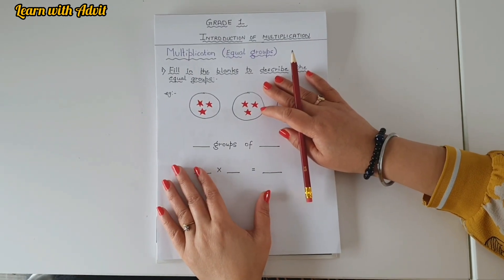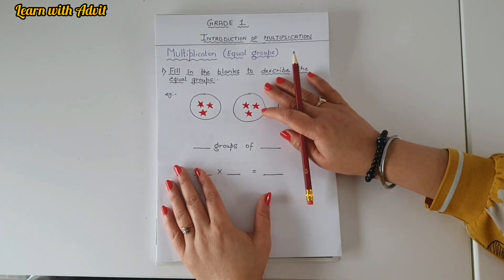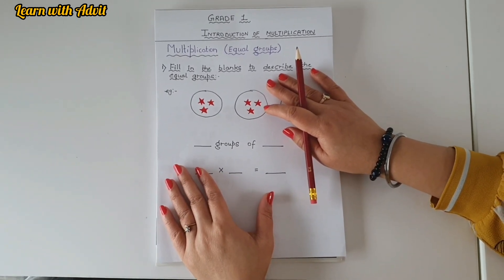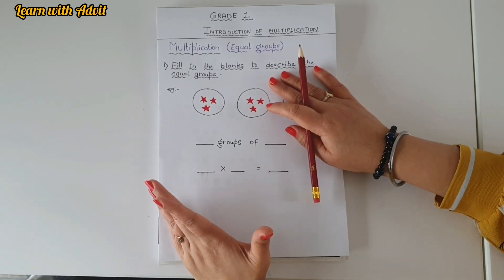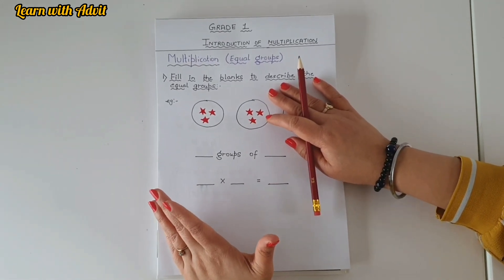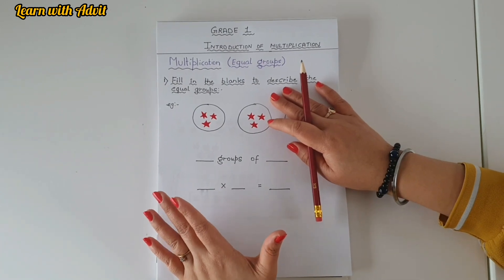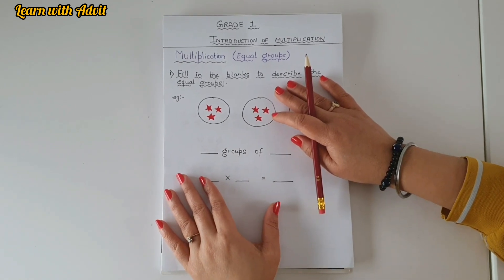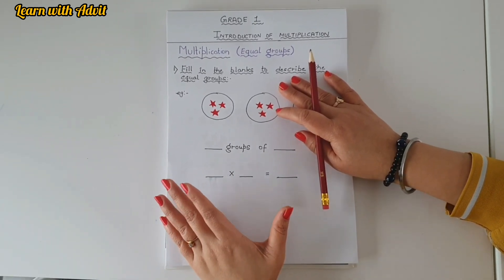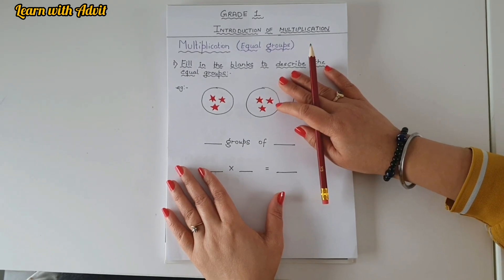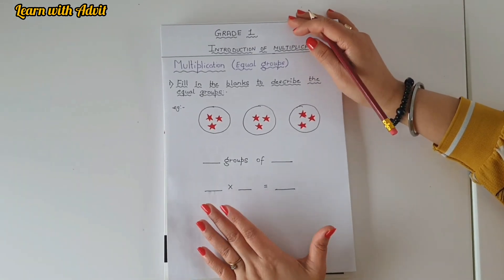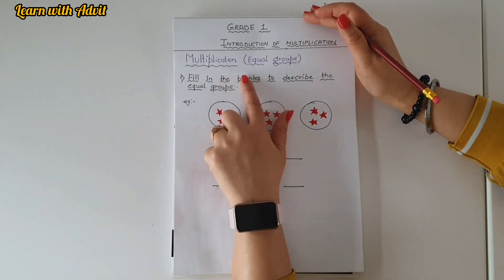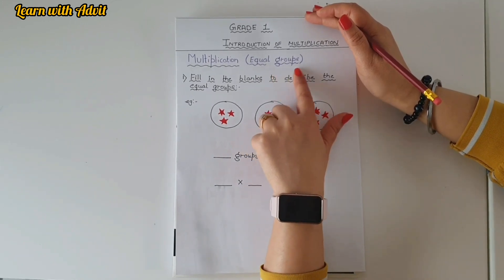Hi everyone, welcome back to our channel Learn with Art. Today's video is about Grade 1 kids, or you can use it for UKG kids. I have created this video specially for a UKG kid — her name is Dhiyashree — and the topic is Introduction to Multiplication. Let's get started. Multiplication is about equal groups.